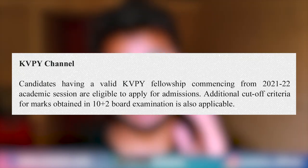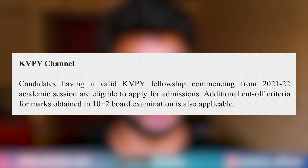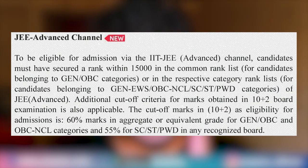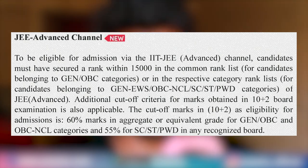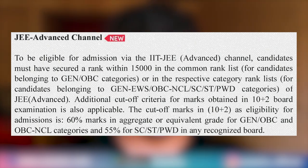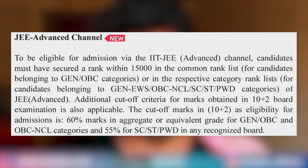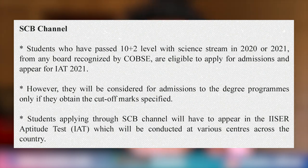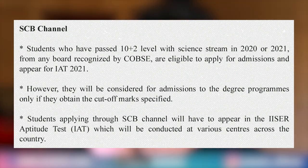For KVPY: if you have a KVPY fellowship, you can apply. If you are in first year with a KVPY fellowship, you can apply for IISER admissions through the KVPY channel. For JEE Advanced: for General and OBC, your CRL (Common Rank List) should be below 15,000; for other categories like ST, SC, OBC-NCL, it should be within 15,000 in the respective category. For the SCB/IAT channel, you must have passed class 12th in 2021 or 2022 — either a current student or a first dropper — and have the qualifying percentage in class 12 boards.